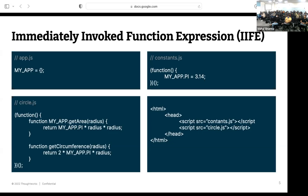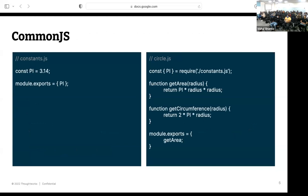IIFE gives you a way to encapsulate code, but 'myApp' is still on the global context, so naming collisions can still happen. If another embedded JavaScript library also uses 'myApp' as a global, it will override yours and things will stop working. Developers also had to be very careful about semicolons in tightly written function expressions.